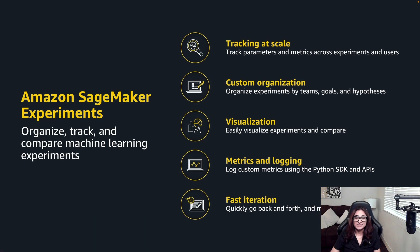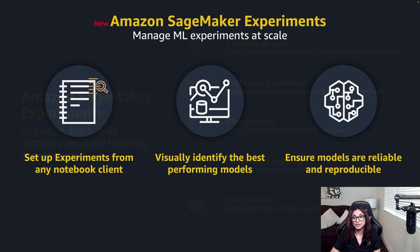SageMaker Experiments lets you organize, track and compare a large number of machine learning experiments to find the best performing model. With the new capabilities of Amazon SageMaker Experiments, it has now become a part of the SageMaker SDK, which means that you no longer have to install any additional packages to maintain the model executions. Each of these executions within an experiment is called a run, with which you can record all your model artifacts such as parameters, algorithm, dataset information and model metrics.